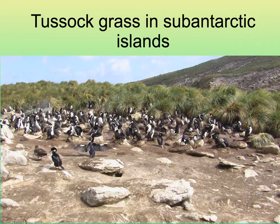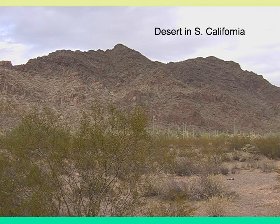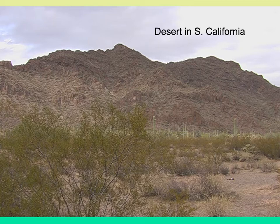Not penguins, but relatives of puffins — these are gannets. There are deserts all over the world where things are dry; some are hot, some are cold. Here's some desert in Southern California, maybe the Mojave Desert — generally a gray-brown place with a few bits of green cactus. This might be a time when there's been a little rainfall, as some of the shrubs have leaves on them.